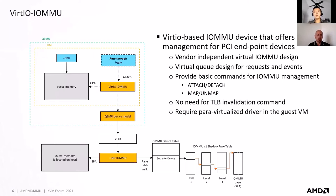In this slide, this is a detailed example of a software-based IOMMU solution called VirtIO IOMMU. This is a software-based solution that is vendor-independent, so you can enable VirtIO IOMMU for x86 or ARM guest VMs. The design of this approach is very straightforward — it leverages the VirtIO framework, using VirtIO queues for request and event communication. This device also provides basic commands for IOMMU management.